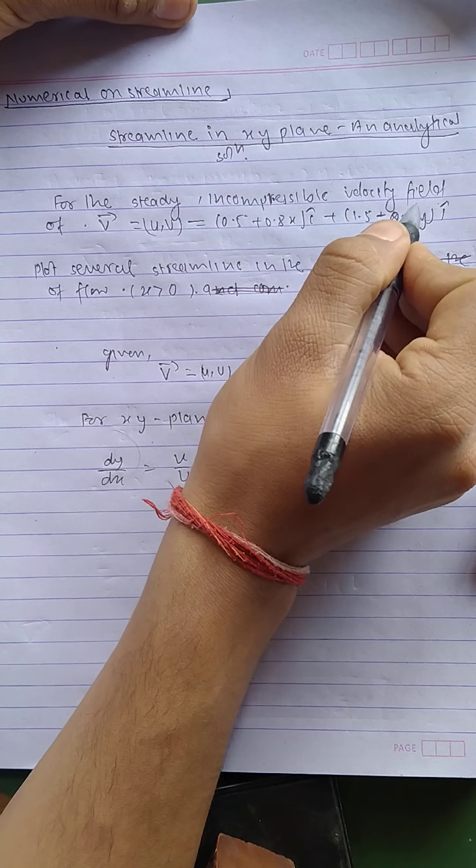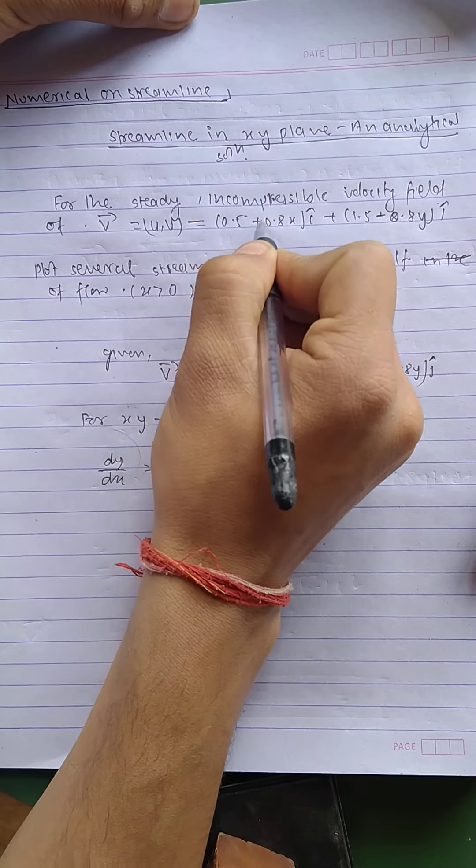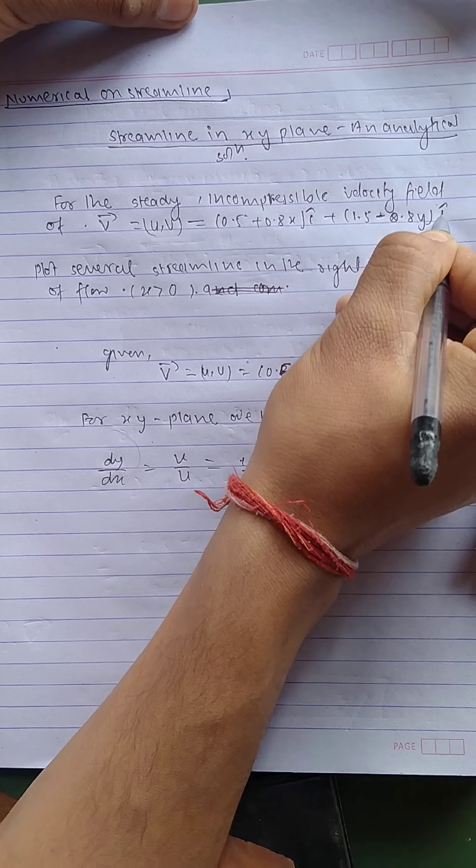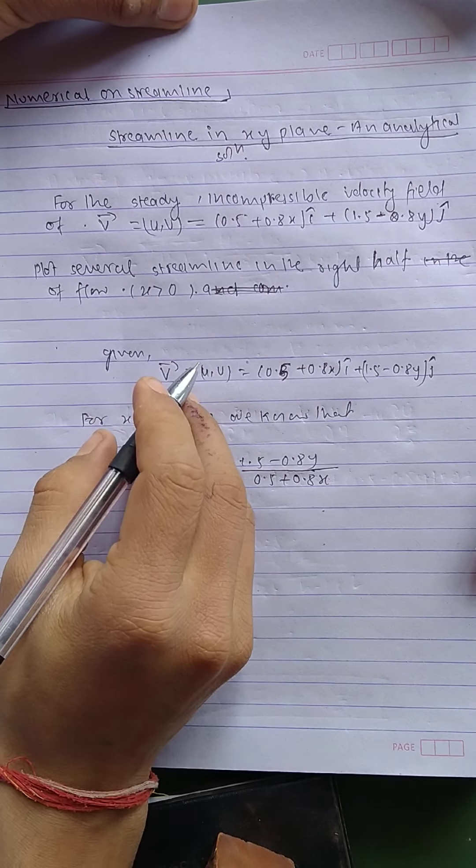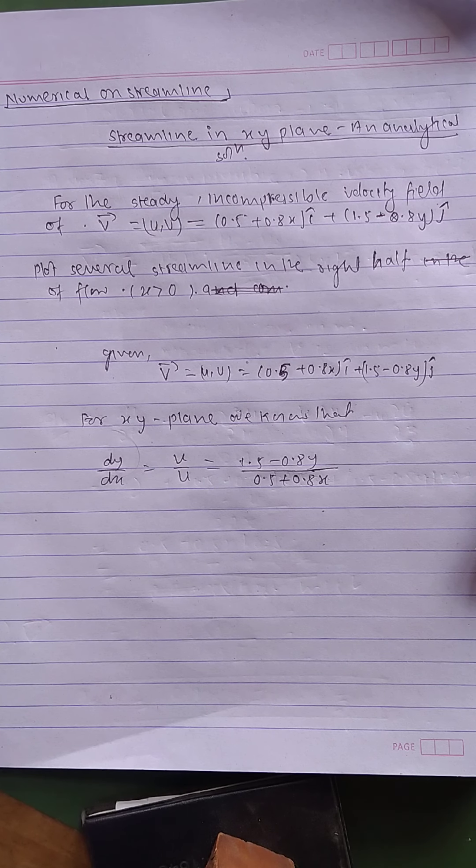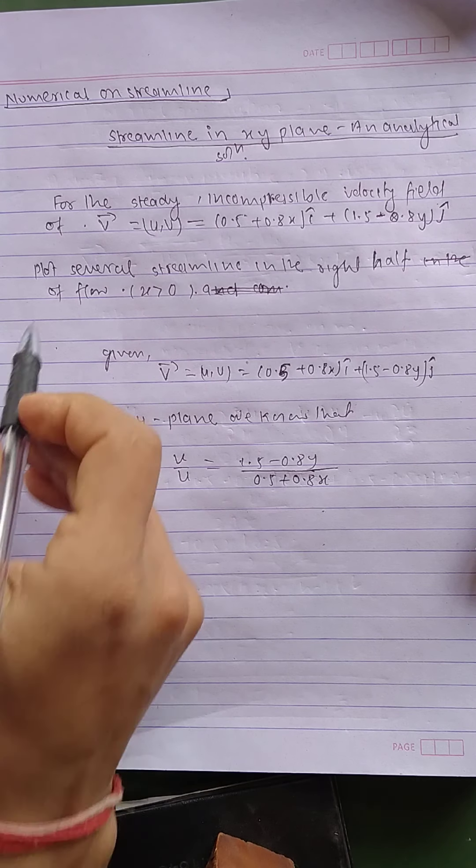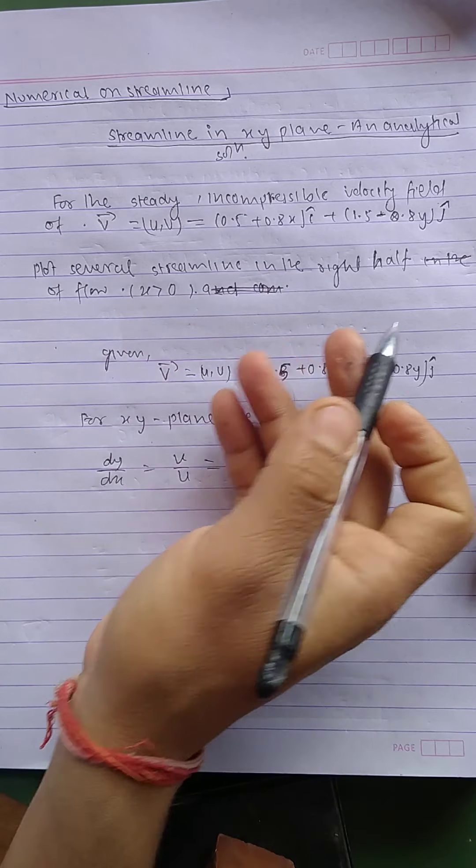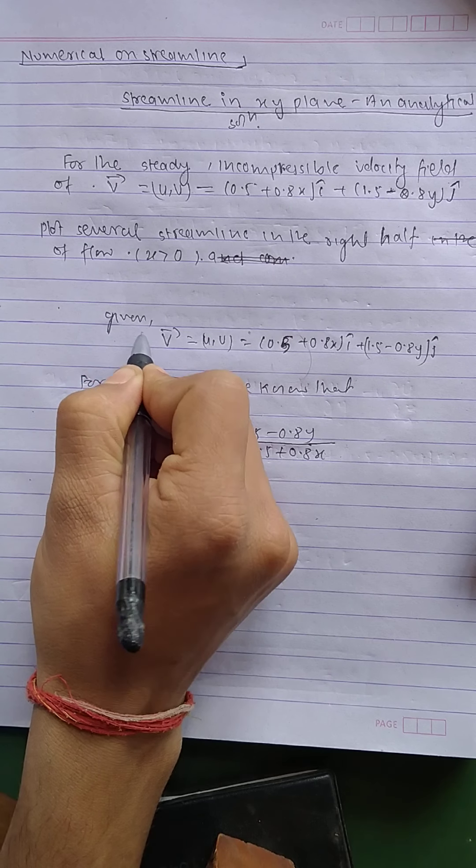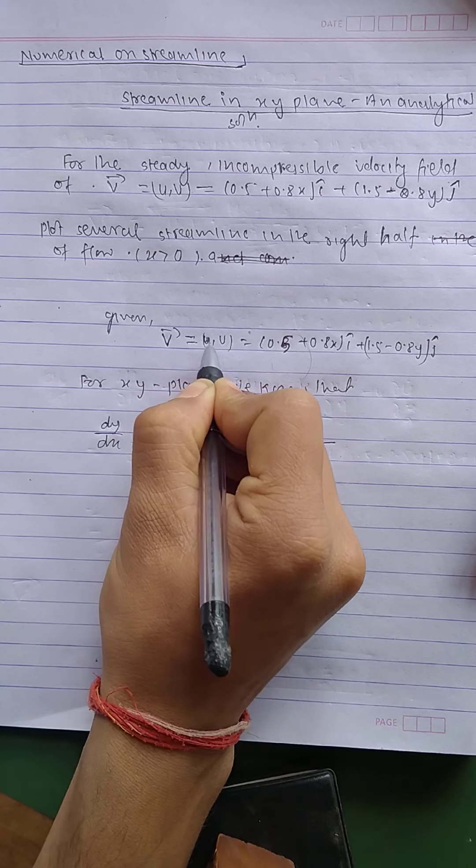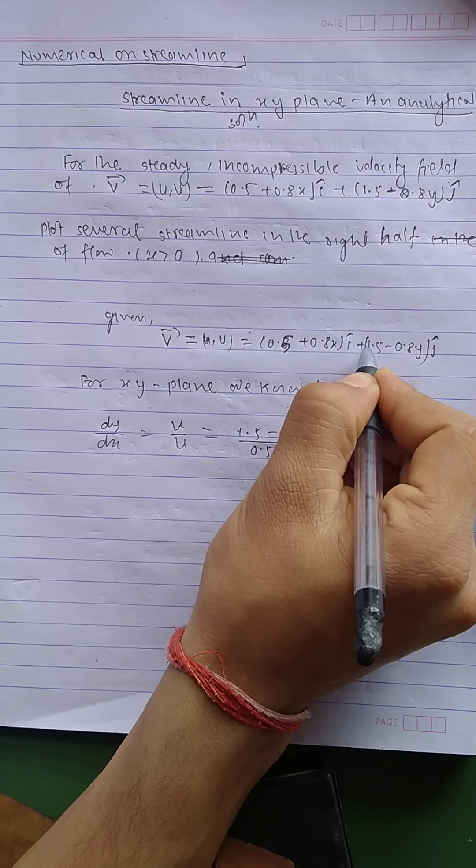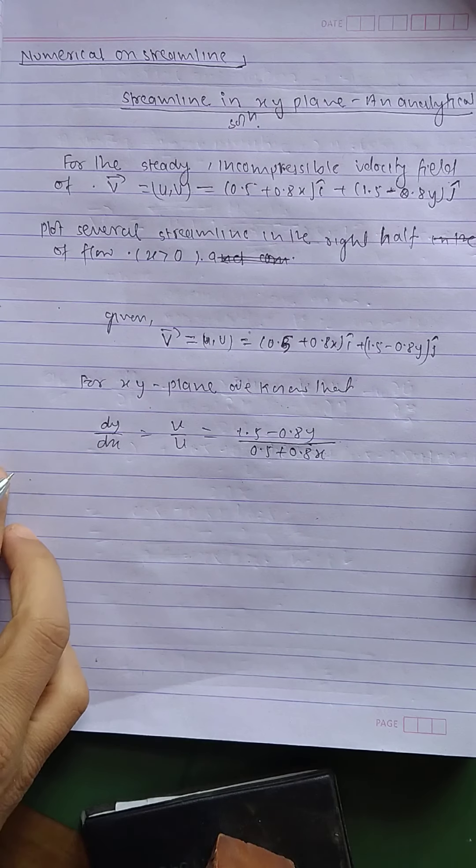Here for the steady incompressible velocity field, v vector equals u comma v equals 0.5 plus 0.8x i cap plus 1.5 minus 0.8y j cap. This is a vector field and we have to find out the streamline in x-y plane for the plot several streamlines in the right half of the flow x greater than 0.